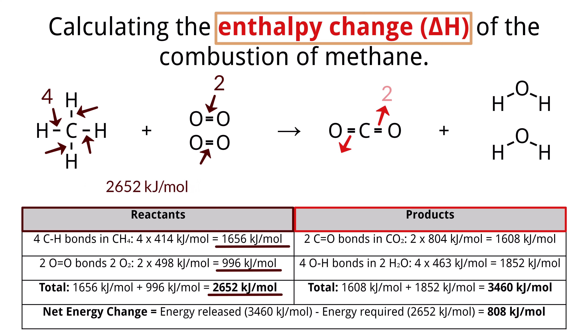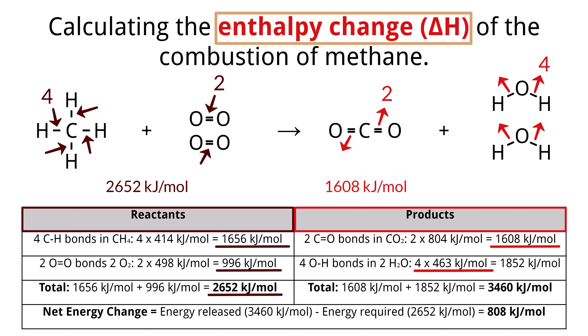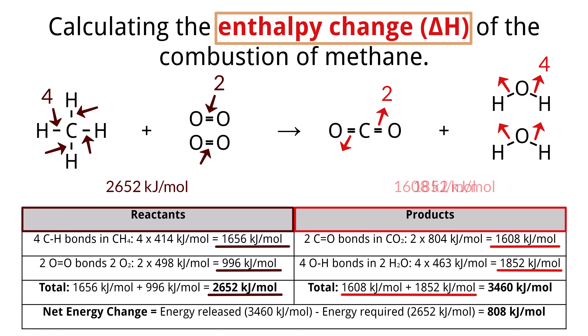On the product side, we have two C=O bonds in CO2: 2 × 804 kJ/mol = 1,608 kJ/mol. There are four O–H bonds in the two H2O molecules — each H2O has two O–H bonds — so 4 × 463 kJ/mol = 1,852 kJ/mol. The total energy released when forming the bonds in the products equals 1,608 + 1,852 kJ/mol, for a total of 3,460 kJ/mol.